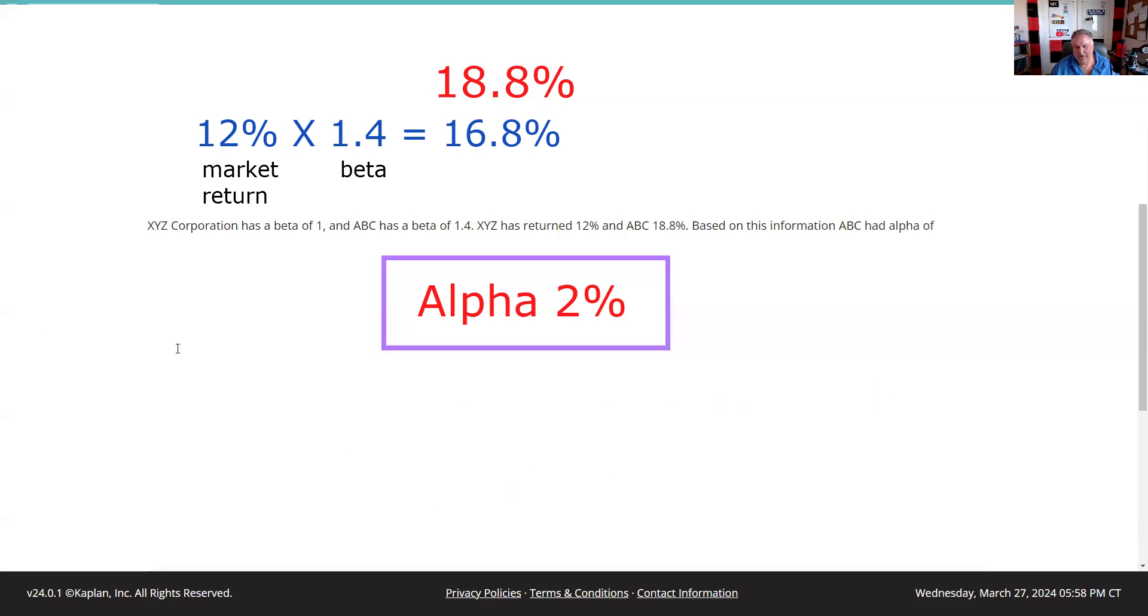Remember, inch by inch, your 65, 66 is a cinch, yard by yard, your 65, 66 is hard. And I'll see you for the next explication request. The answer to this question is the alpha is 2%. We have excess return over beta of 2%.